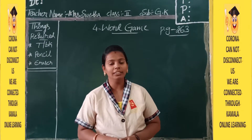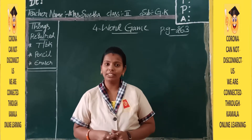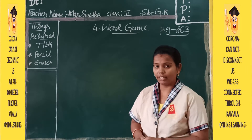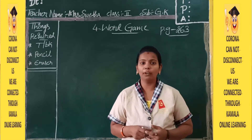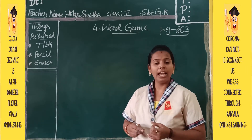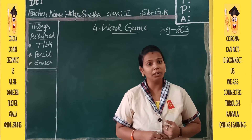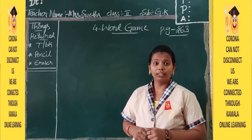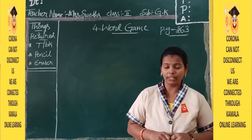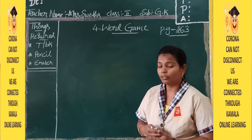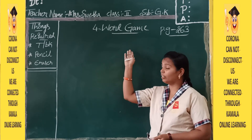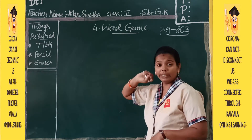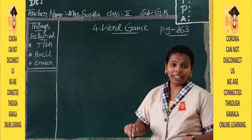Welcome to GK Class 7. In the previous class, we completed our third lesson. Till now we have completed three lessons: identifying the flowers, interesting animals, and cities of India. Today we are going to start with our new lesson, that is the fourth lesson — Word Game.